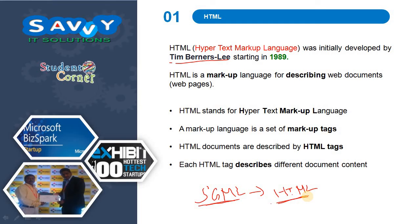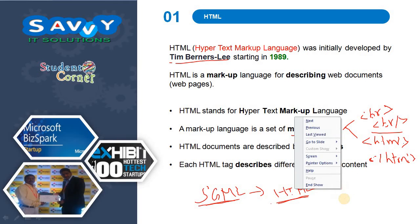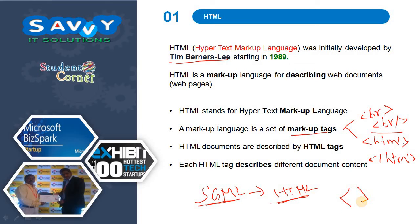A markup language is a set of markup tags, and here the markup tags are of two types: pair tags and non-pair tags. Non-pair tags use only one tag. Pair tags have two parts — a starting tag and an ending tag. Each and every tag is written between a left angle bracket and right angle bracket. HTML documents are described by HTML tags, and each HTML tag describes different document content.